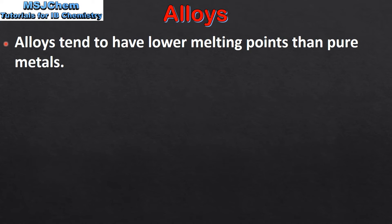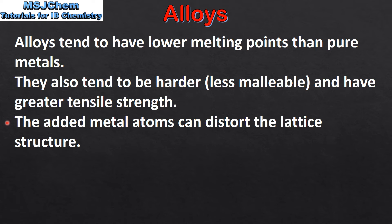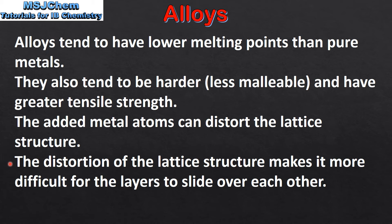Alloys tend to have lower melting points than pure metals. They also tend to be harder — that is, less malleable — and have greater tensile strength. This is because the added metal atoms can distort the lattice structure. The distortion of the lattice structure makes it more difficult for the layers to slide over each other, making the alloy stronger and harder.